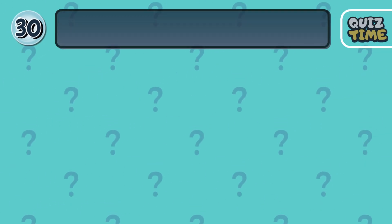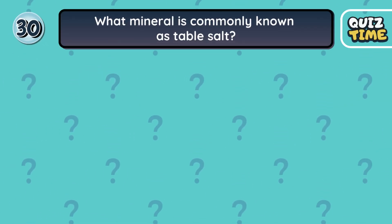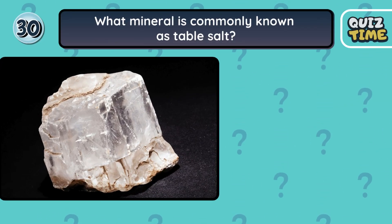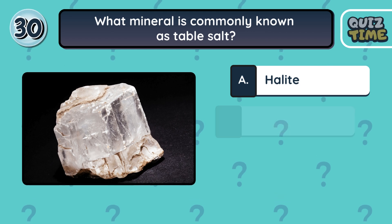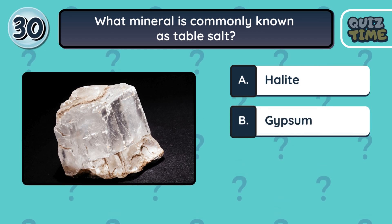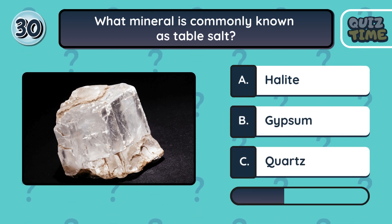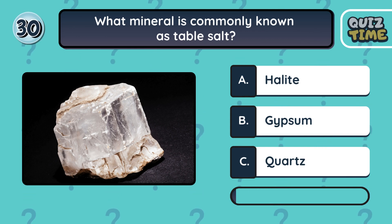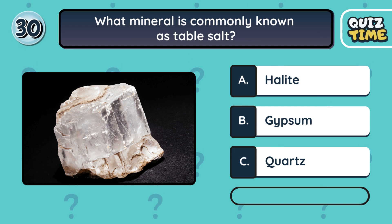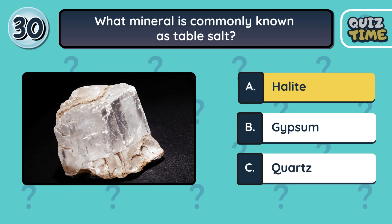Number 30. What mineral is commonly known as table salt? A. Halite. B. Gypsum. C. Quartz. The correct answer is A. Halite.